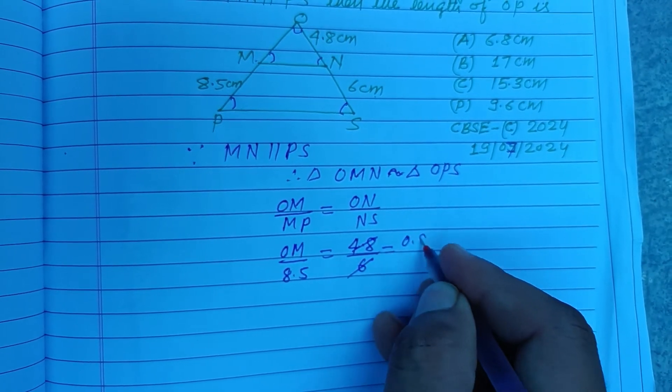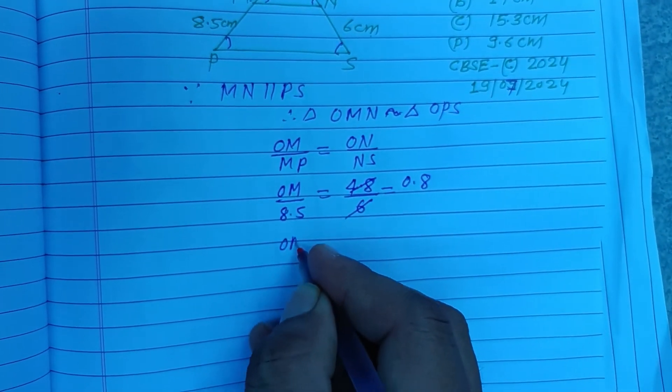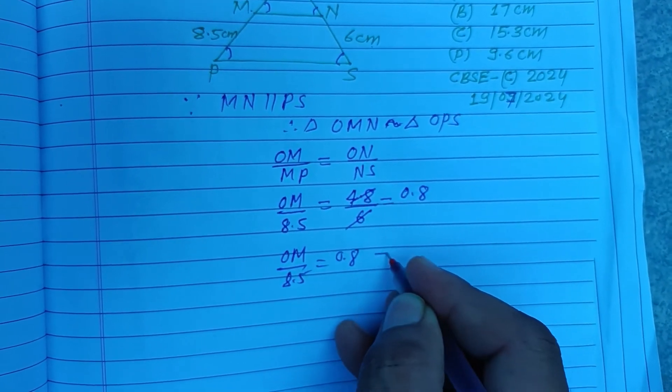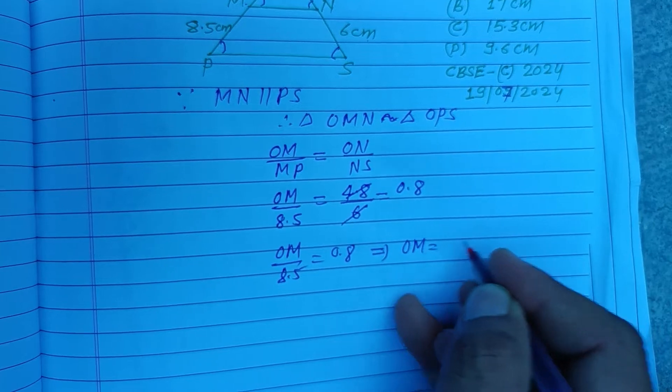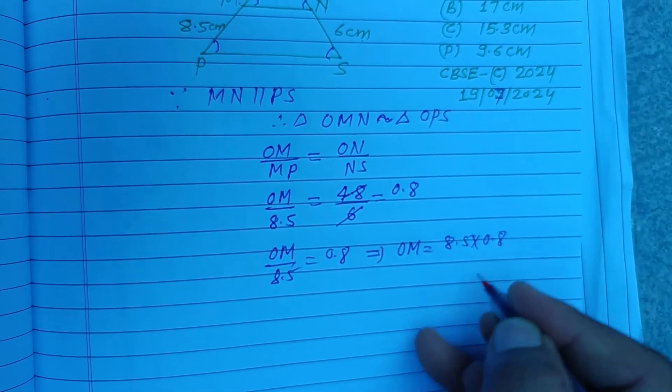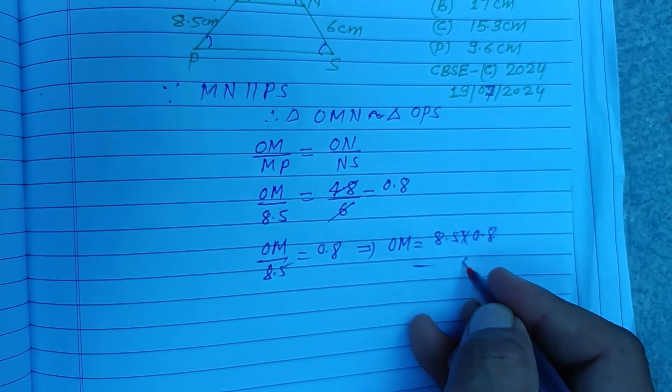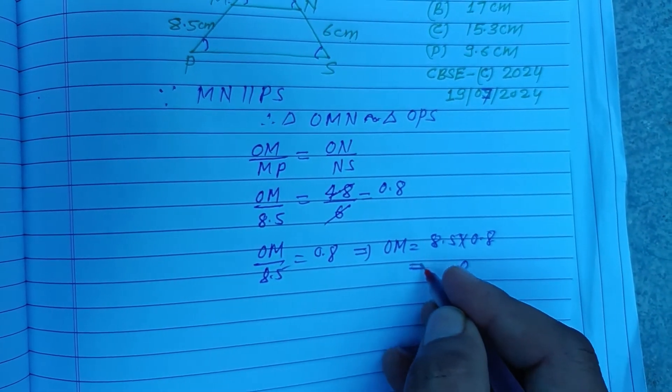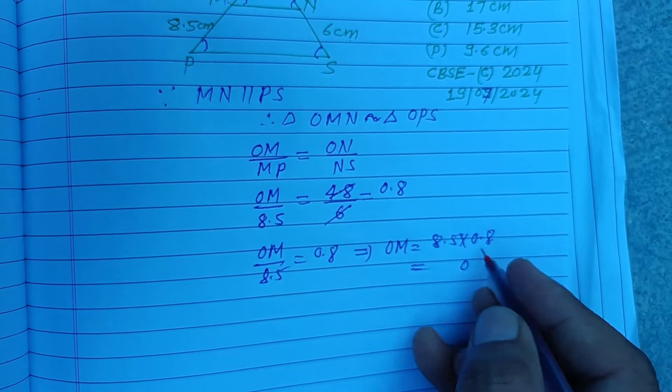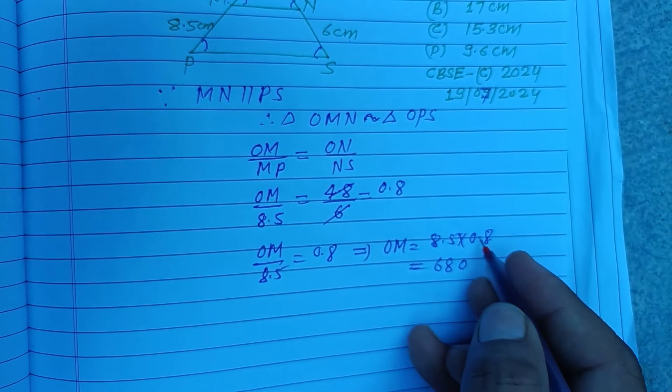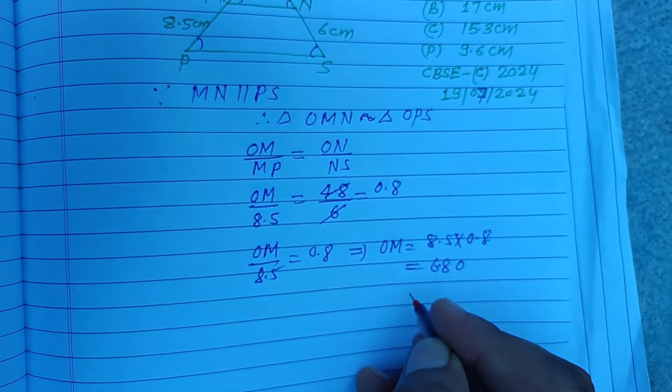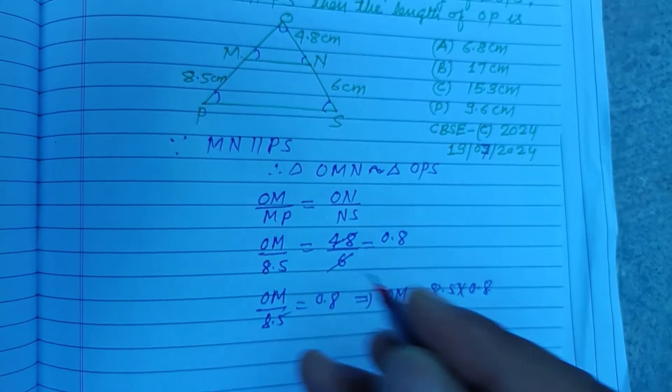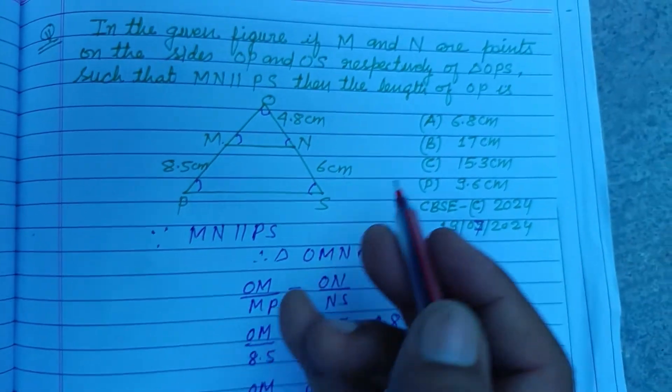OM divided by 8.5 equals 0.8. Therefore, OM equals 8.5 times 0.8. That's 40 plus 68, which is 6.8. So OM equals 6.8 centimeters. Now we need to find OP.